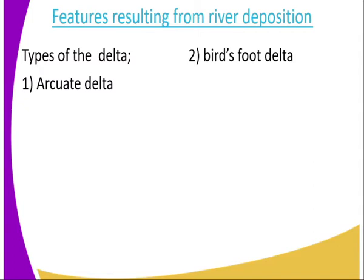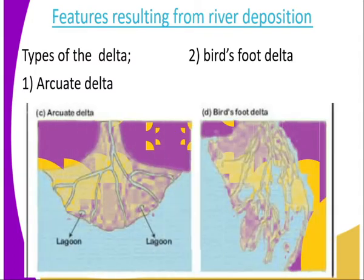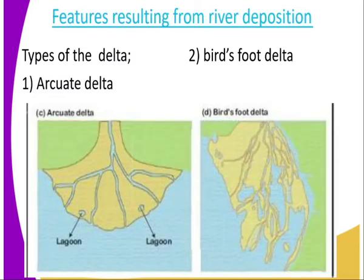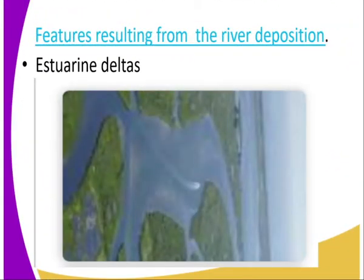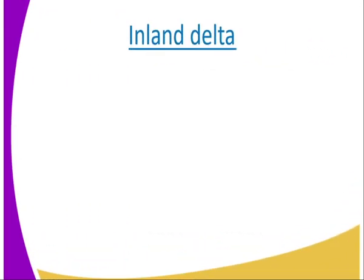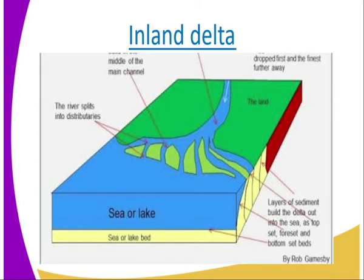There are a number of delta types. We have the arcuate delta, as you can see, and the bird's foot delta. The arcuate delta is found where the river enters a lake or the sea.